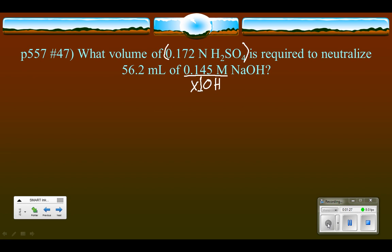So when we take that and multiply 0.145 molarity times 1 OH ion, then that's going to tell us that we're going to have 0.145 normality just as easily.